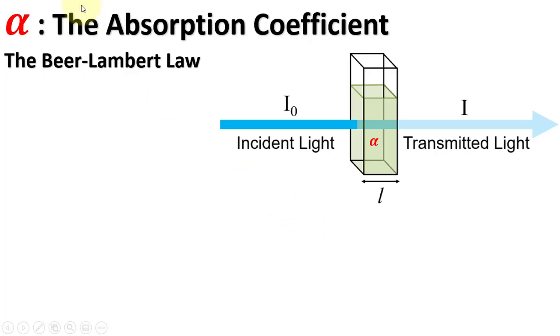We will first understand the absorption coefficient alpha. According to the Beer-Lambert law, the transmitted intensity is equal to the exponentially decaying incident intensity.